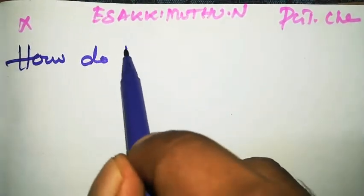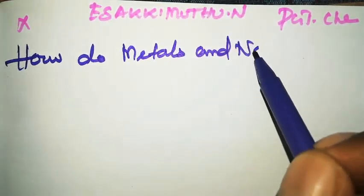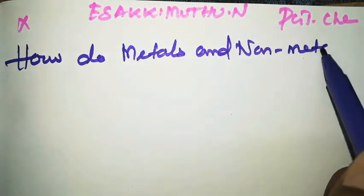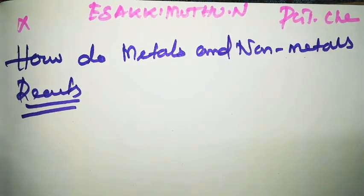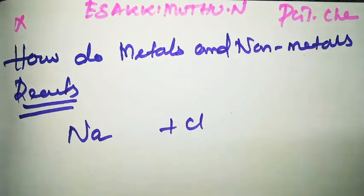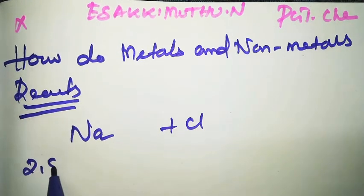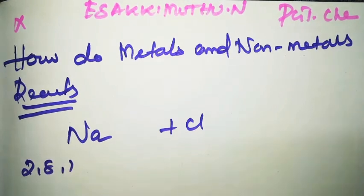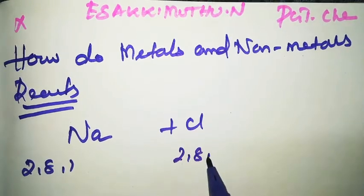How do metals and non-metals react? Example of a metal: sodium. So for the non-metal, Cl (chlorine) is there. The atomic number of sodium is 11, so its shell configuration is 2, 8, 1. Chlorine's atomic number is 17, giving the configuration 2, 8, 7.